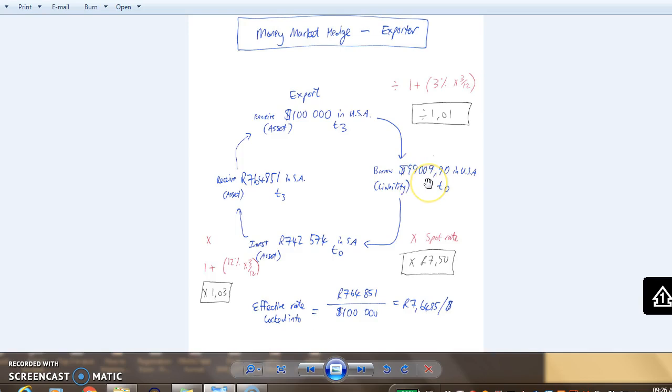We borrow $99,900 now. Then we take the $99,900 US dollars, convert it at the spot rate today and invest it in South Africa. That will be R742,000 at the spot rate.